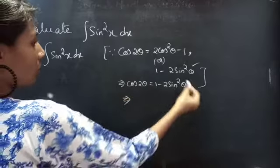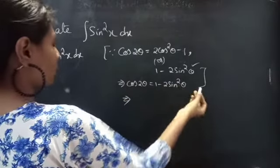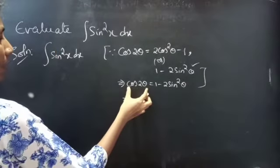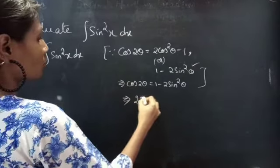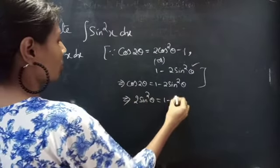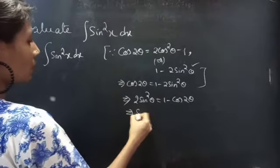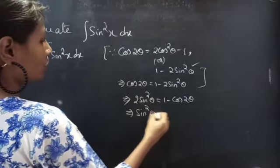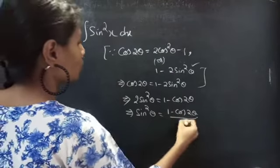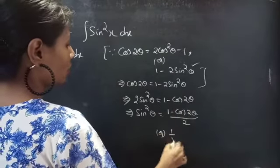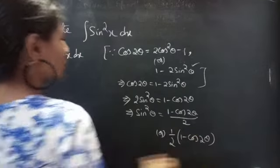Now bring this minus 2 sin square θ to LHS and take this cos 2θ to RHS. You get 2 sin square θ equals 1 minus cos 2θ. From this you get sin square θ equals 1 by 2 times 1 minus cos 2θ.